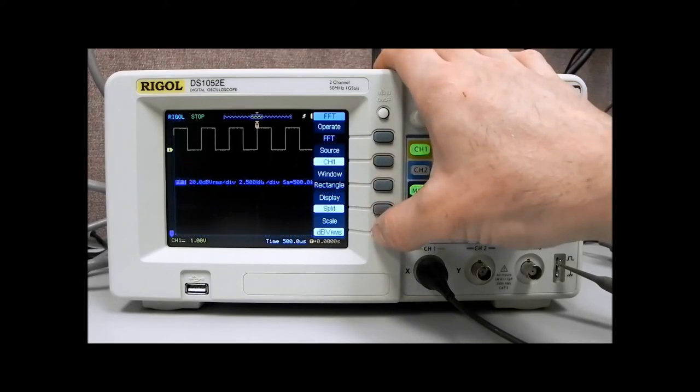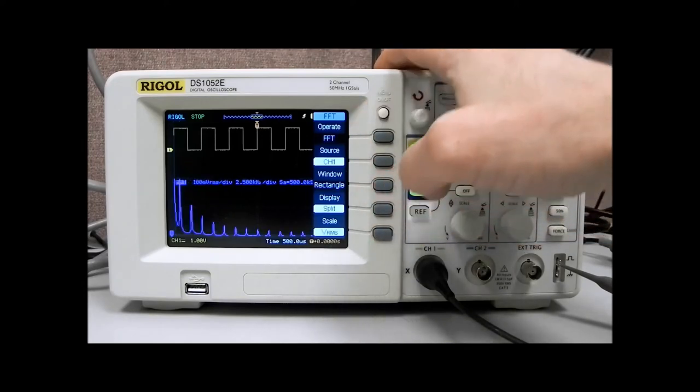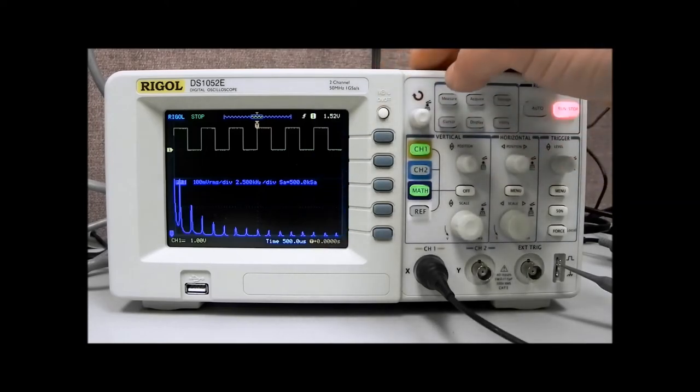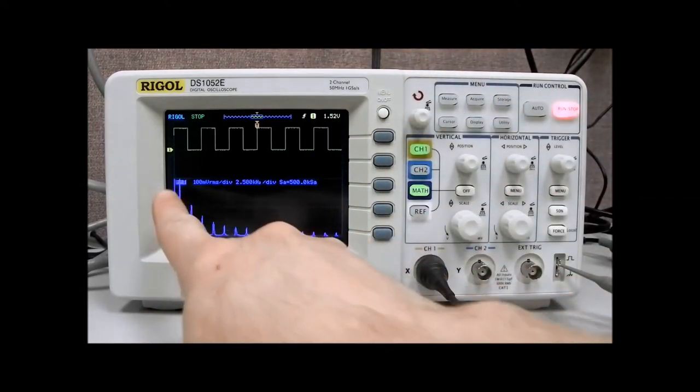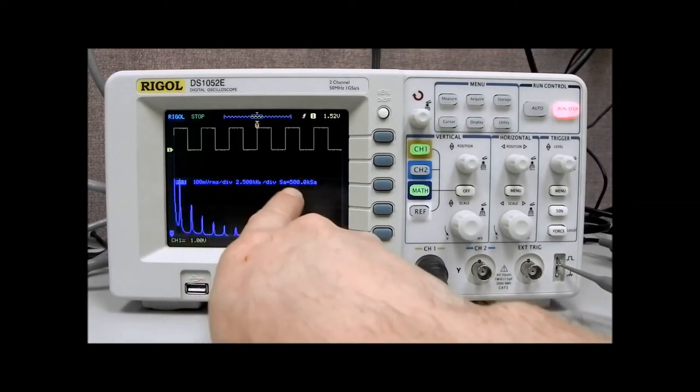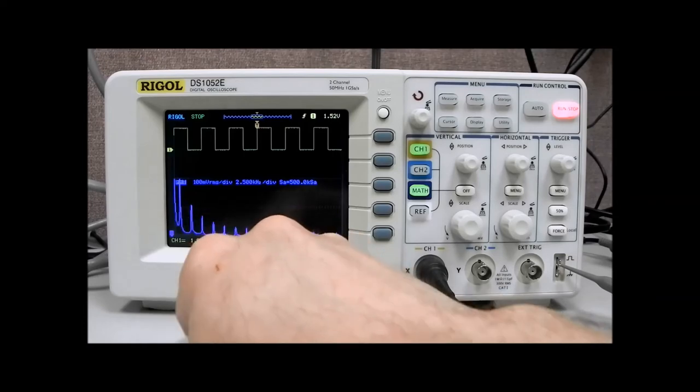We can also select dB VRMS, or we can go VRMS, and let's stick with that. Now you can see what we have now is we have frequency versus voltage, and I think you can make out some of these up here, some of the analysis of that particular waveform.